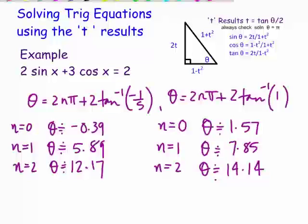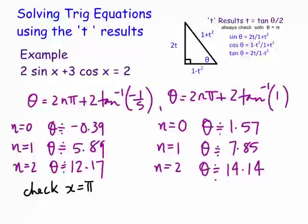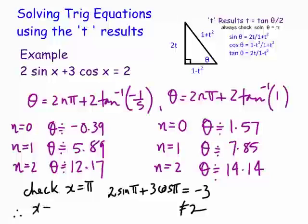It's important to do this check because sometimes it is missed. So we substitute x = π: 2·sin(π) + 3·cos(π) = 2·0 + 3·(−1) = −3. This does not equal 2, so x = π is not a solution. You can also see from the general solutions that we get multiples like 2π and 2.5π — but x = π itself is not a solution.